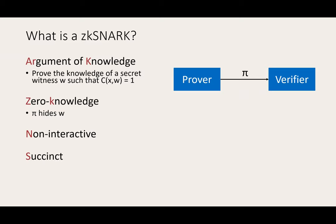Finally, a ZK-SNARK is succinct. There are two forms of succinctness. First, the size of the proof is sublinear in the size of the statement. Second, the cost to verify a proof is also sublinear in the size of the statement.